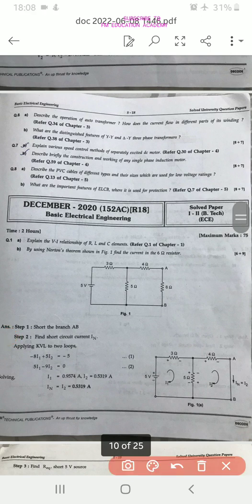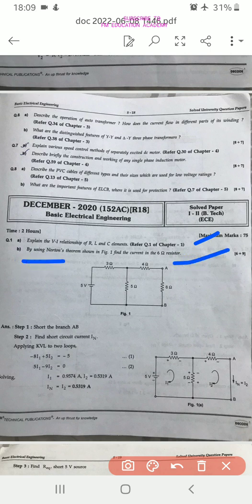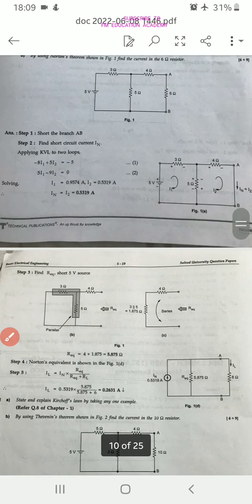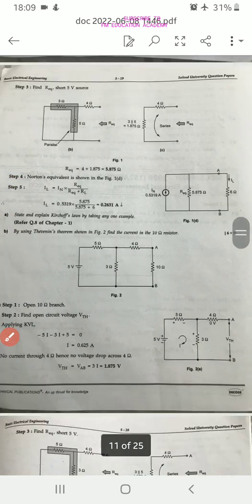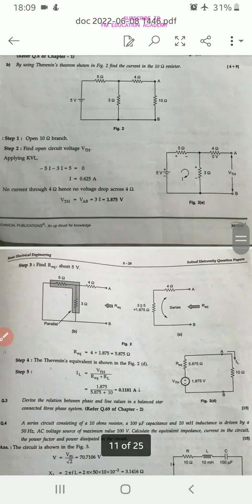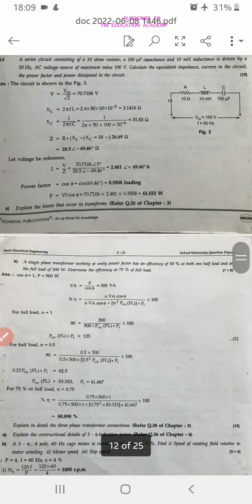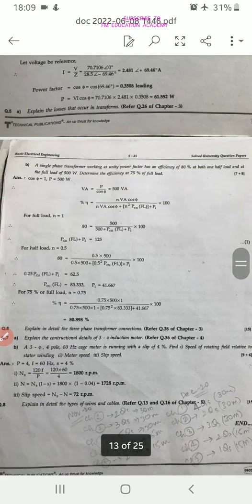First question, explain VI relationship of RL and C elements. That you can see, it's an important question only. Be witness by using Norton's theorem. You have to find out the Norton's equivalent. Just go through all the questions.